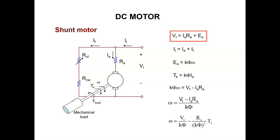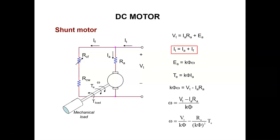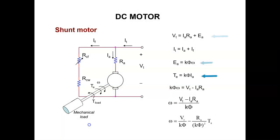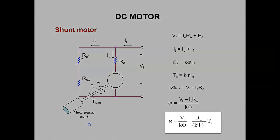The voltage equation of the armature is obtained by writing the KVL for this loop, and the current equation is obtained by writing the KCL at this node. We have also seen that the back EMF voltage Ea is given by the equation where K is determined by the physical construction of the machine, phi is the flux per pole, and omega is the speed of the motor. The torque is given by these equations where K is the same constant, phi is the flux per pole, and Ia is the armature current. Using these three equations we can write down the speed equation.